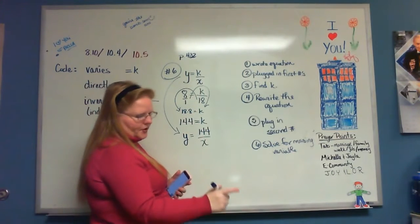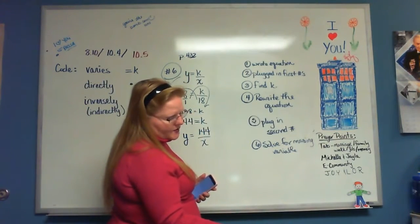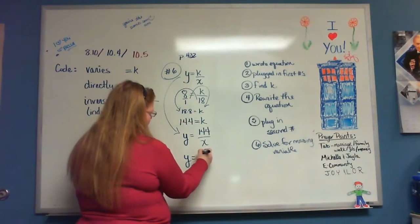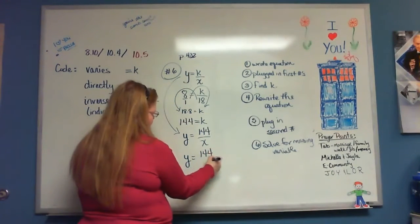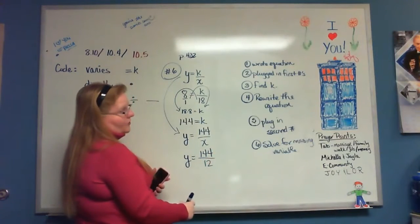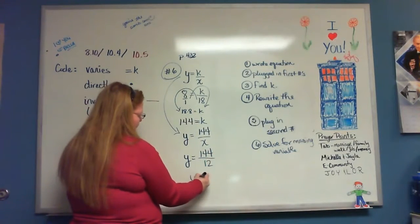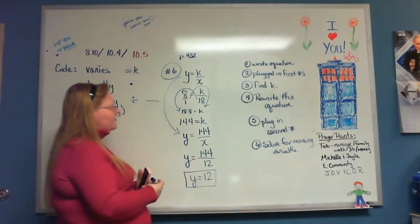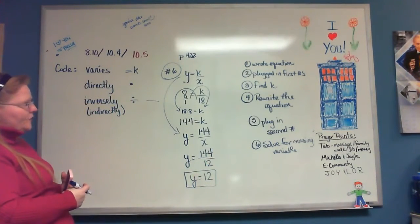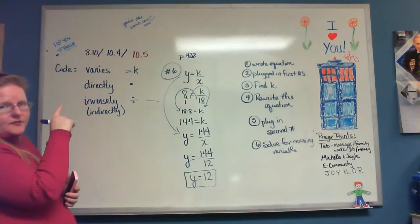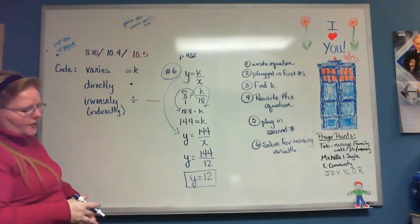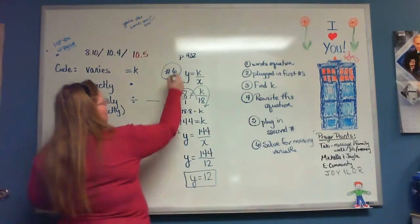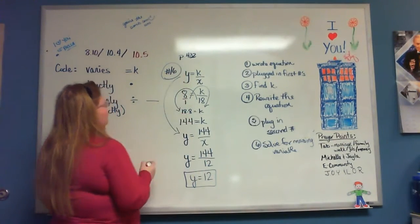Now I plug in the second numbers — it says find Y when X is 12. So Y equals 144 over 12, which is 12. Just that quick, just that easy. The only difference from direct variation is the way you write your equation — everything else works the same.